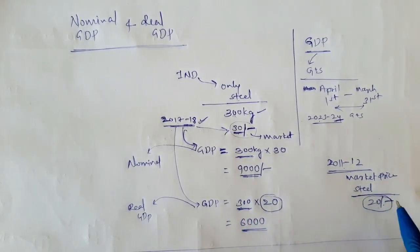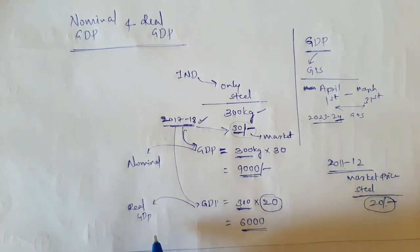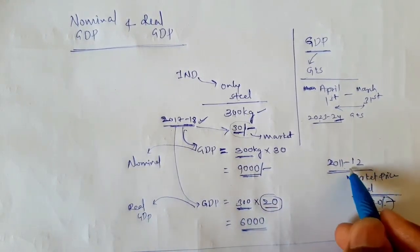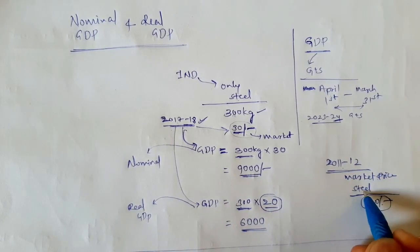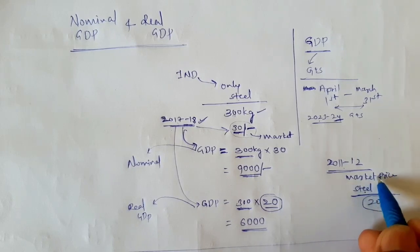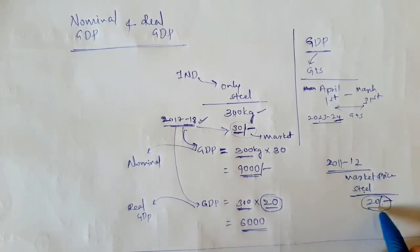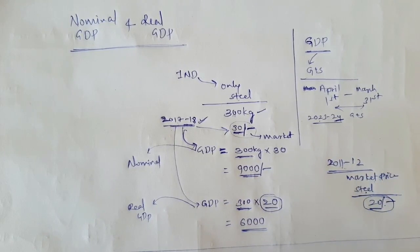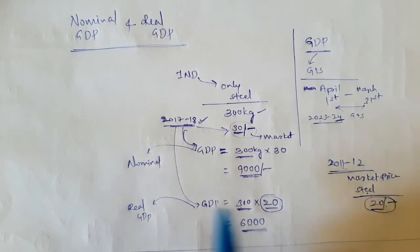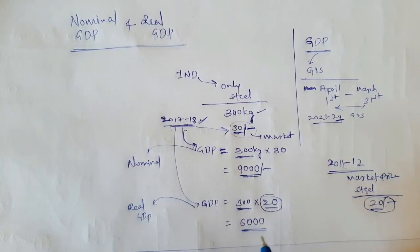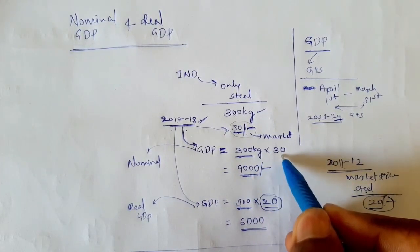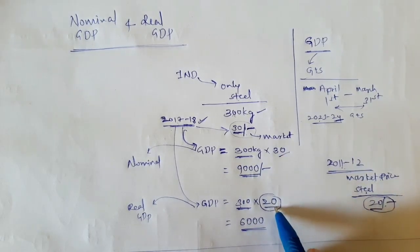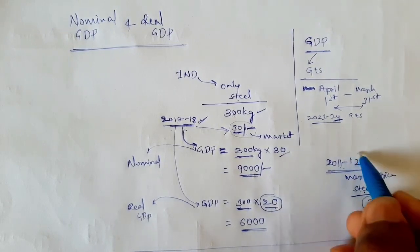For real GDP, we are taking the 20 rupees, which is the market price of a different year — 2011-12. This is the key difference between nominal and real GDP: for nominal GDP we take the market price of the current year, while for real GDP we take the market price of another year — called the base year.